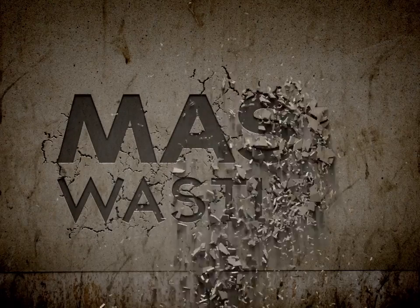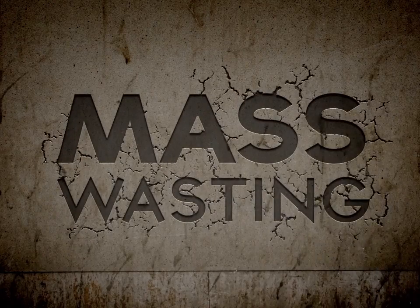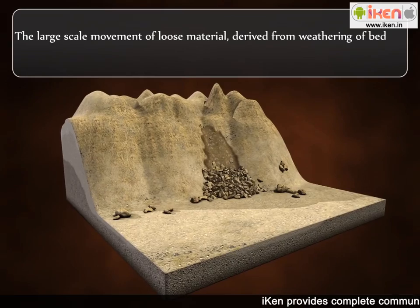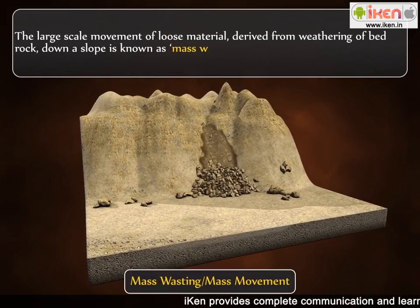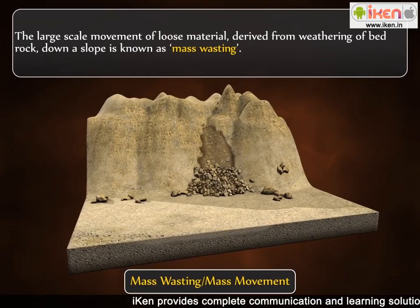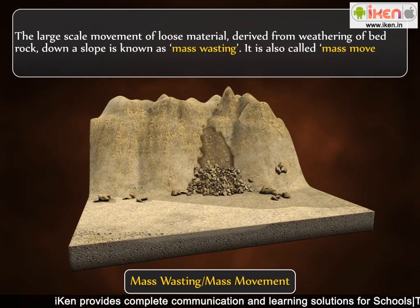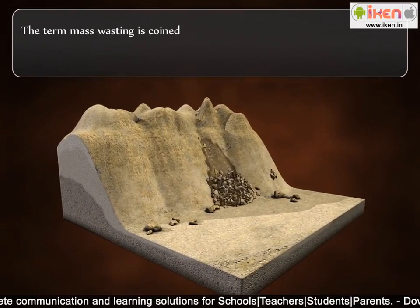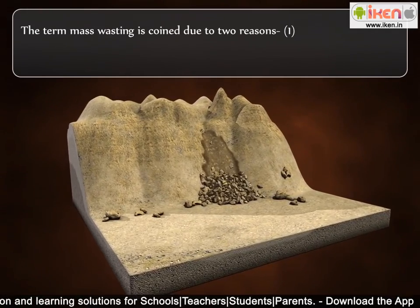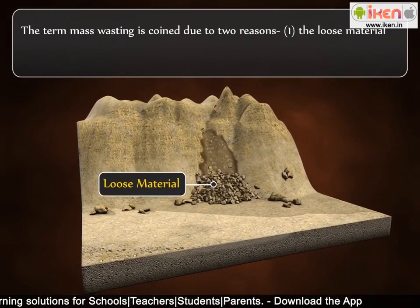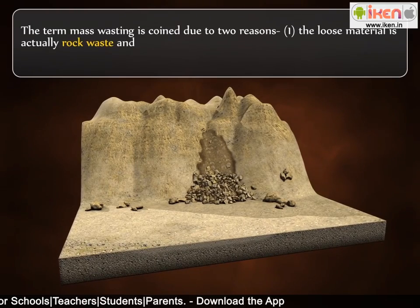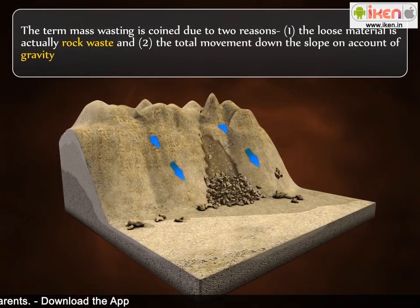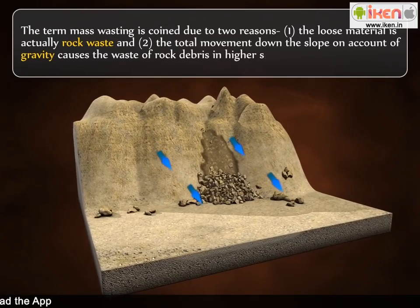Mass Wasting. The large scale movement of loose material derived from weathering of bedrock down a slope is known as mass wasting. It is also called mass movement. The term mass wasting is coined due to two reasons: first, the loose material is actually rock waste, and second, the total movement down the slope on account of gravity causes the waste of rock debris in higher slopes.